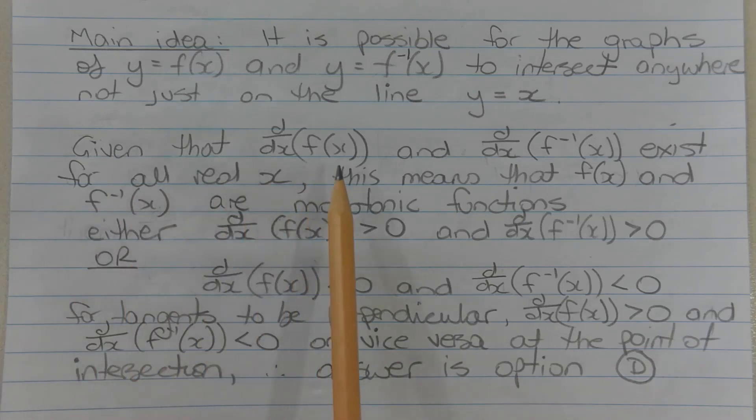Given that the derivative of f(x) and the derivative of f^(-1)(x) exist for all real x, this means that f(x) and f^(-1)(x) are smooth continuous monotonic functions. In other words, they are functions with no breaks that do not change direction over all real x.